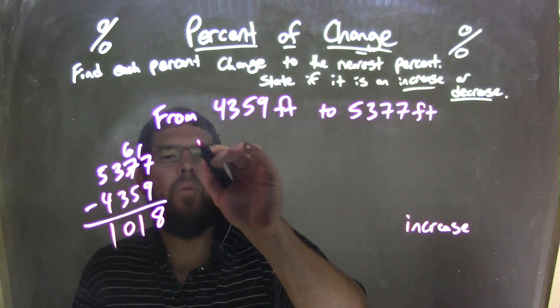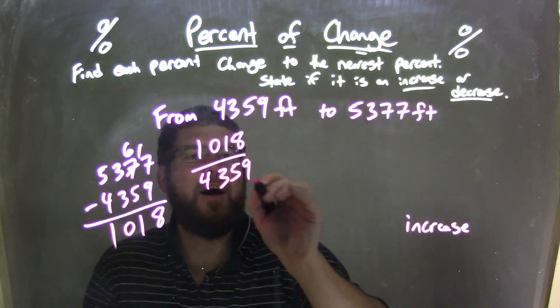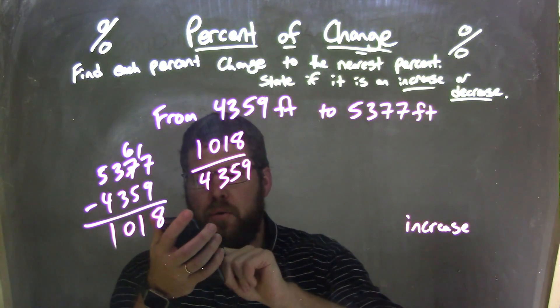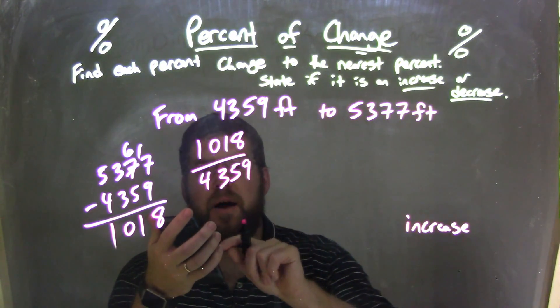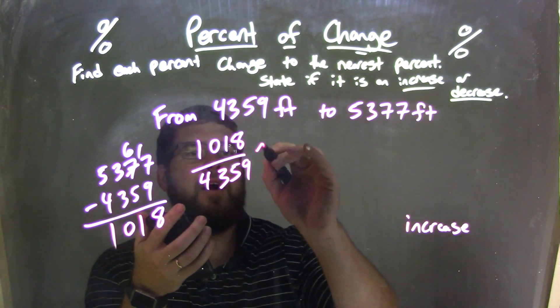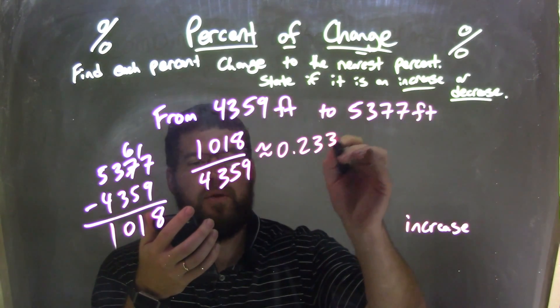So we take that 1,018 divided by our first number, 4,359, and that comes out to be, using that good old calculator here, 1,018 divided by 4,359 comes out to be approximately 0.2335.